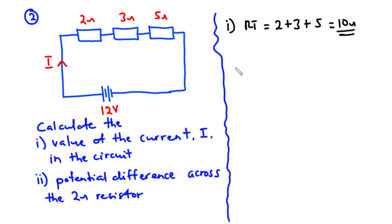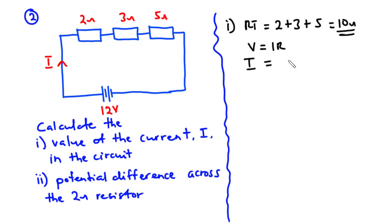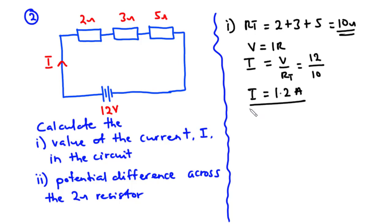For resistors connected in series, we have the same current flowing through each of the resistors. If you have any set of resistors connected sequentially with the same current flowing through them, then those resistors are connected in series. So the total resistance Rt is 10 ohms. Now, according to Ohm's law, V equals I times R, so we can make I the subject by dividing through by R: I equals V divided by R. The voltage is 12 volts and Rt is 10 ohms, so I equals 12 divided by 10, which is equal to 1.2 amperes.